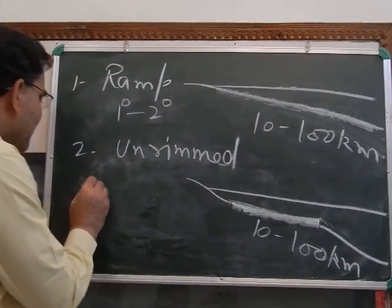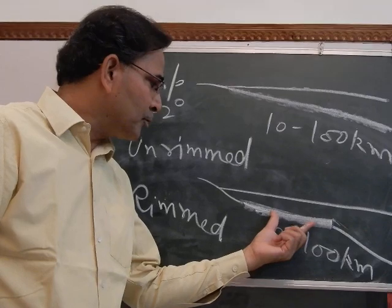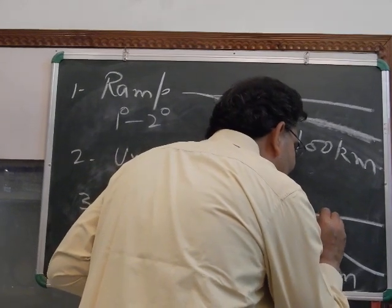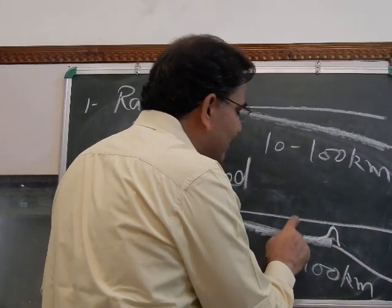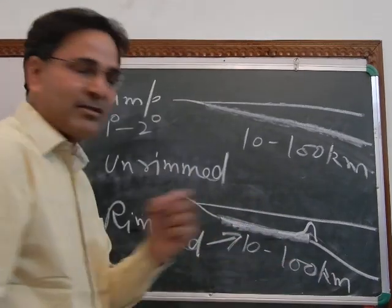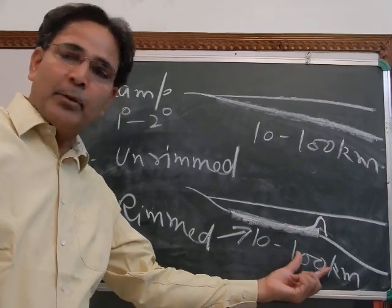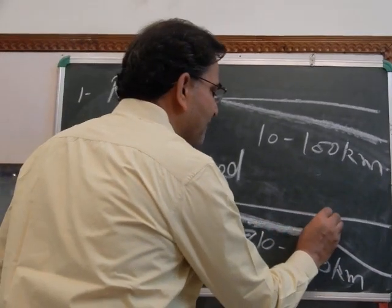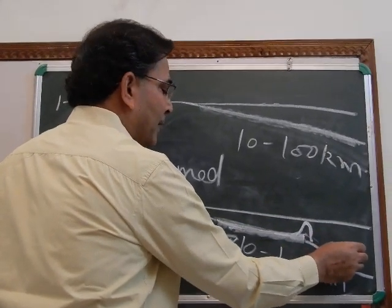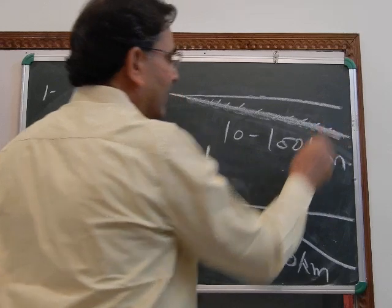The rimmed platform is similar to the unrimmed platform in that it is also flat and almost horizontal, and also 10 to 100 kilometers in size. But the difference is that there is a rim — a reef — which disconnects this platform from the open ocean. The only difference between unrimmed and rimmed platform is that in the rimmed platform there is a rim which isolates this zone from the rest of the ocean, and limestones are deposited within it.